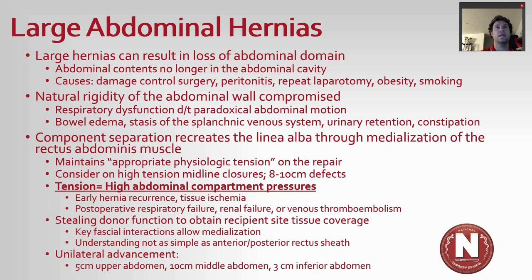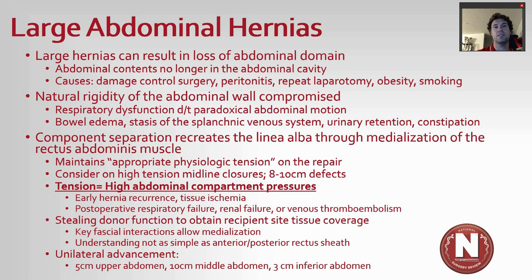Component separations recreate the linea alba through medialization of the rectus muscles and maintain appropriate physiologic tension on the repair. I consider some form of component separation for defects that are eight to ten centimeters in length, because these high-tension repairs have a high risk of failure. You are essentially stealing donor function to obtain recipient site tissue coverage. A retrorectus approach on both sides typically gives about two centimeters of advancement. For larger component separations — anterior or posterior — you can expect about five centimeters in the upper abdomen, ten centimeters in the middle abdomen, and three centimeters in the inferior abdomen.